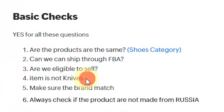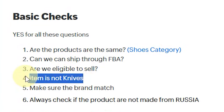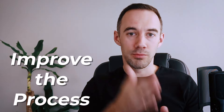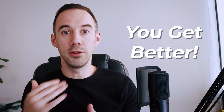When you make a mistake — say, for example, if you were to ever buy a knife and realize knives you shouldn't be selling — you're going to come in here and put it in your process. That way, next time you do an analysis and there's a knife, you'll flag it. Or for example, we bought a product from Russia and it got destroyed by Amazon, or the brand wasn't matching. These little things — every time you have a mistake, you improve the process and you get better.